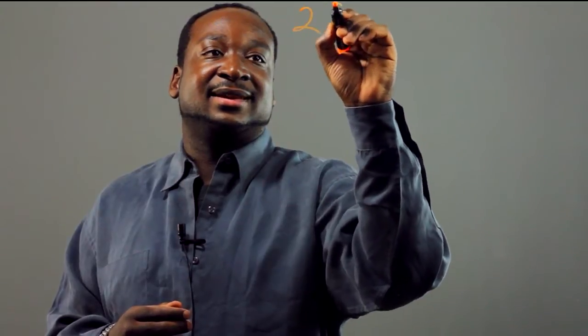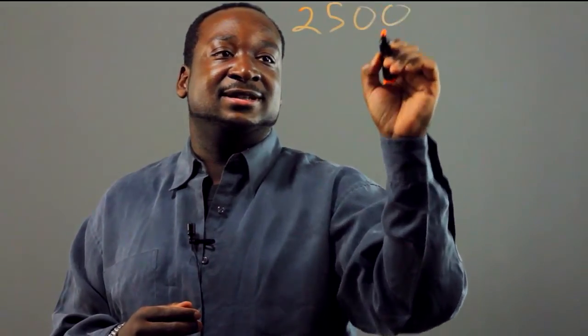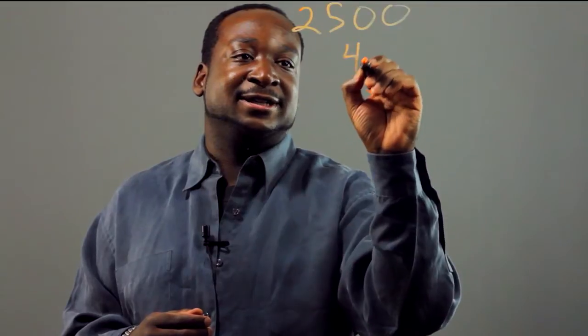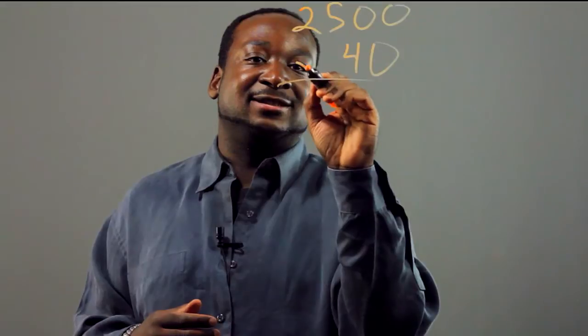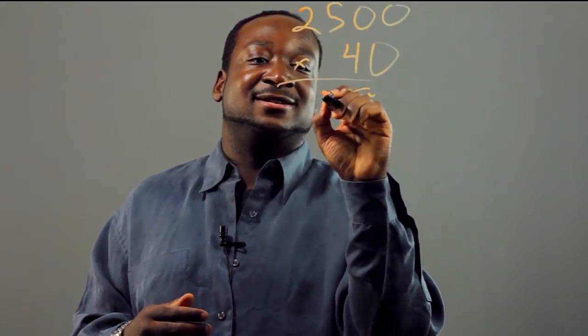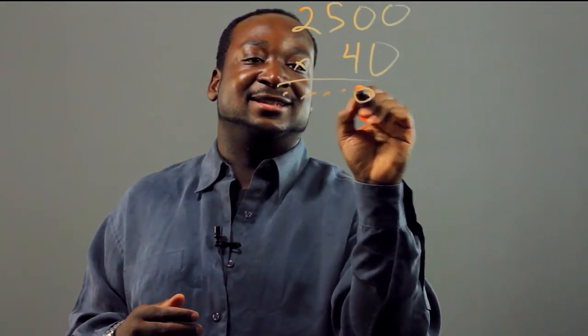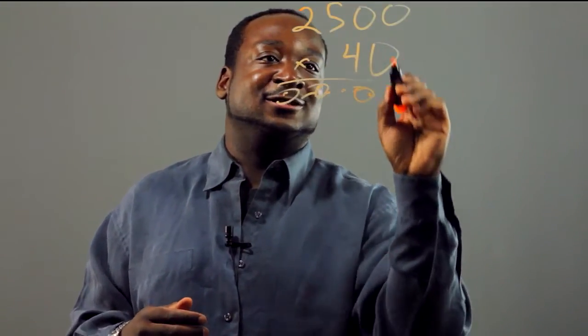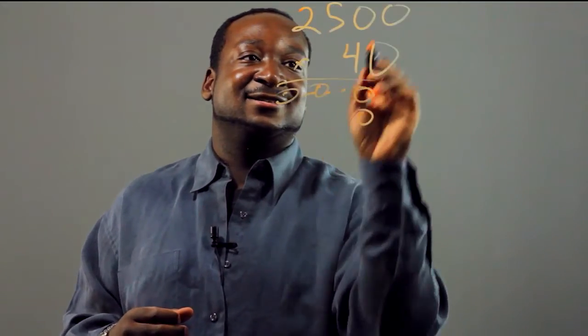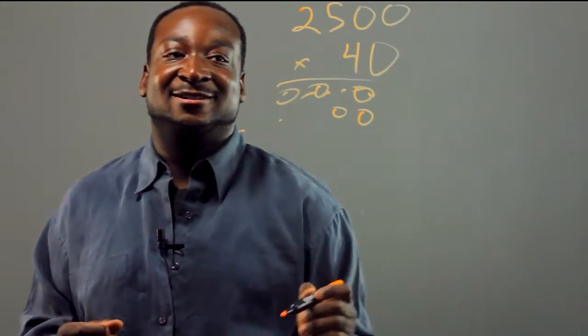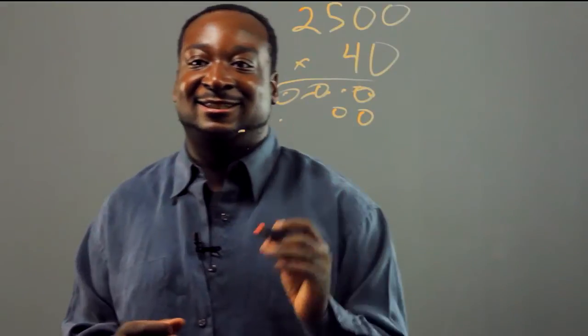Let's say we have the number 2500 and we want to multiply that by 40. If we're going to do this the regular way, it'll take us a long time. Like you want to go zero, add the zeros here, and then hold the place. Zero here, four times zero is zero. It's too long.